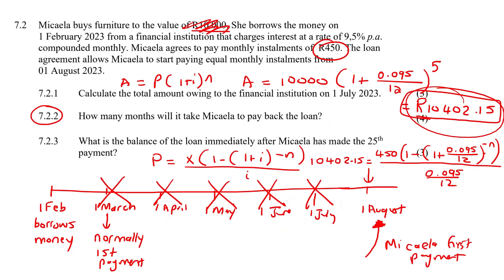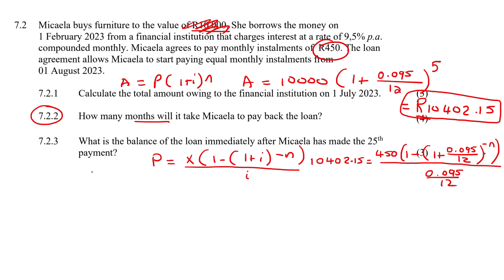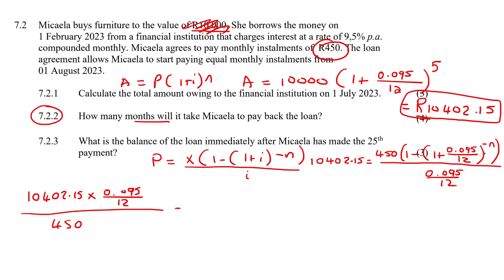They're not asking in what year she'd finish — they just want to know how many months. So go work out the value of N. I would multiply across and rearrange to get: 10,402.15 times (0.095 over 12) divided by 450 equals 1 minus (1 plus 0.095 over 12) to the negative N. Leave it as a fraction because we're going to use logs, and your answers can change a lot if you start rounding off now.